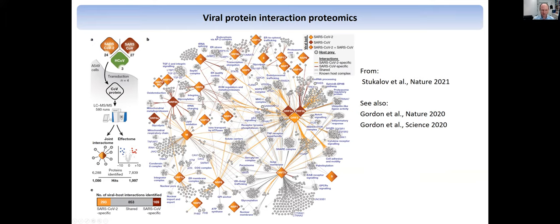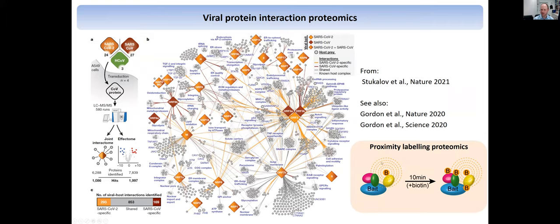We don't do that much of interaction proteomics, particularly because for us it's so important to understand the dynamics, and getting this in a time-resolved manner is quite difficult by IP. I want to mention though — something we use quite extensively now — proximity labeling approaches, where you can have a bait and it gets tagged with, for example, biotin ligase, and everything in close proximity, such as interactors, gets biotinylated. This can be done in 10 minutes, making it highly time-resolved, and you can look over time how interactions change. There are now a number of papers on SARS-CoV-2 where this has been done.